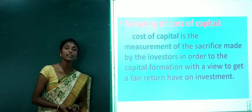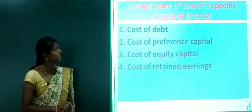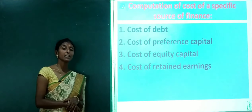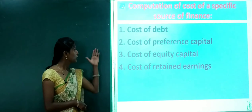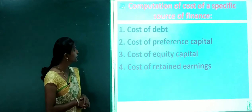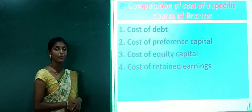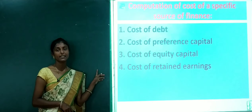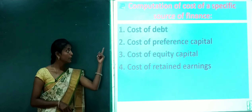The next topic is the computation of cost of a specific source of finance. In this chapter, we start to calculate. The cost of capital is the total of four methods: the first one is the cost of debt, second one is the cost of preference capital, third one is the cost of equity capital, and fourth one is the cost of retained earnings.